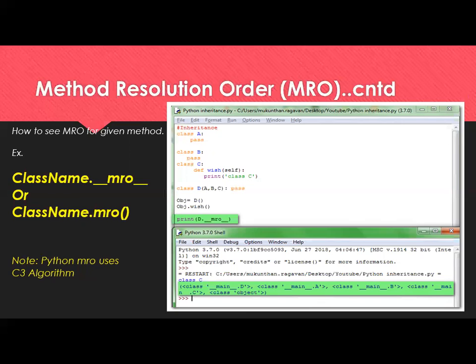For instance, in the example shown, the last line is: print D dot underscore underscore MRO underscore underscore. This means we want to know how the method will be resolved starting from class D. The result at the bottom shows: class D is first, then class A, then class B, then class C, and finally the object class. This is the simple way to understand method resolution order.